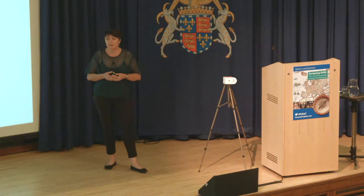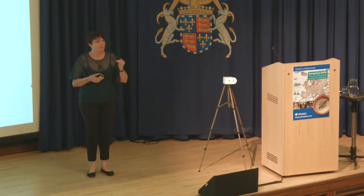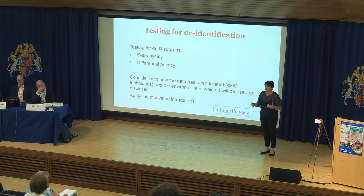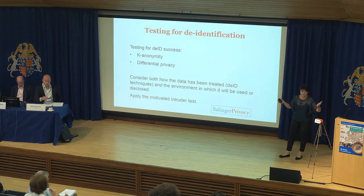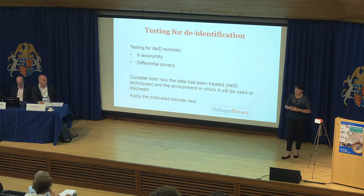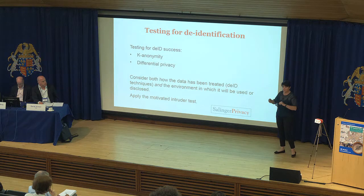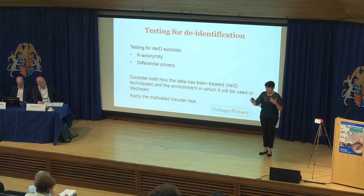K-anonymity is a framework for testing the level of re-identification risk in a data set and whether you've achieved your acceptable level of risk. How an organisation sets its level of risk can differ. If a database — just imagine an Excel spreadsheet full of student records or patient records — if someone says this is K-anonymous where K equals three, what this means is that, assuming the names have been taken out of the data set to start with and you're left with a whole bunch of other information, K equals three means that for any combination of the variables left in the data set, any way you slice and dice that information, there are at least three people who share the same characteristics.